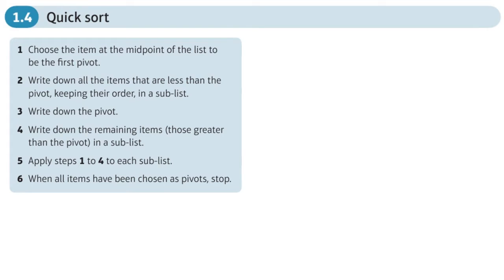This is the full section of chapter one on algorithms, covering quicksort. Quicksort is another way to order a list of numbers or letters into ascending or descending order, or alphabetical or reverse alphabetical order. It works differently to a bubble sort.